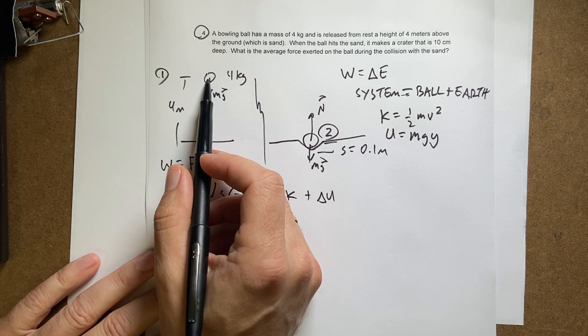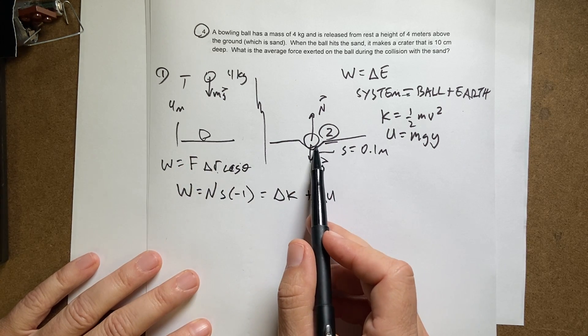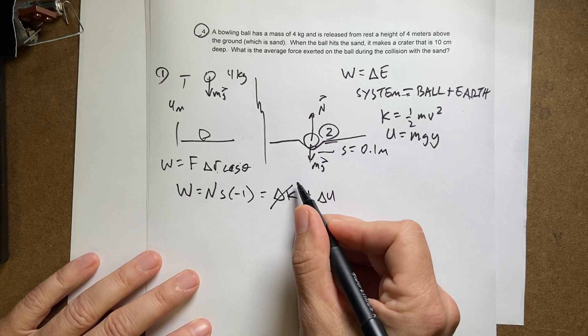Well, what's the speed up there? Zero. What's the speed down there? Zero. Zero minus zero is zero.